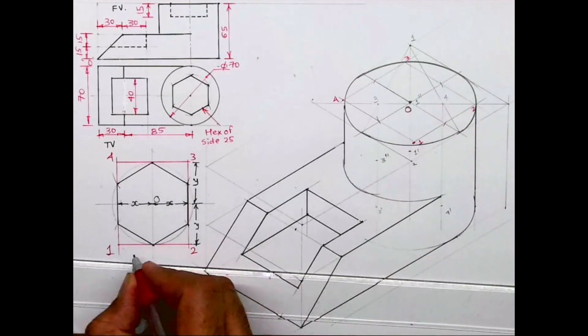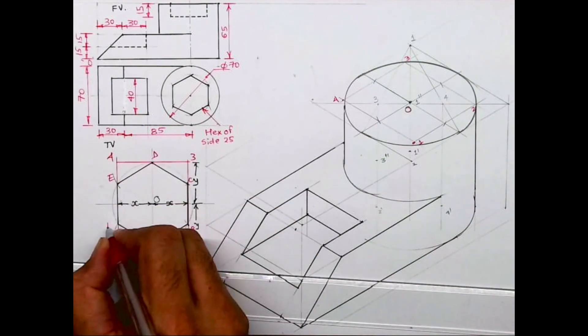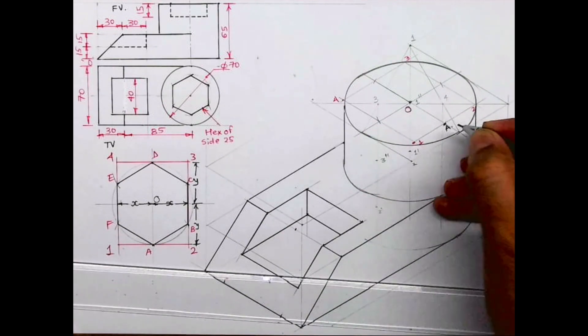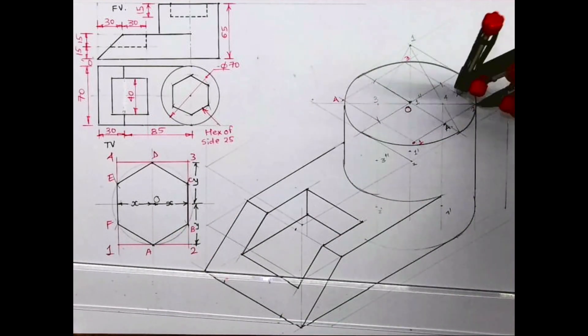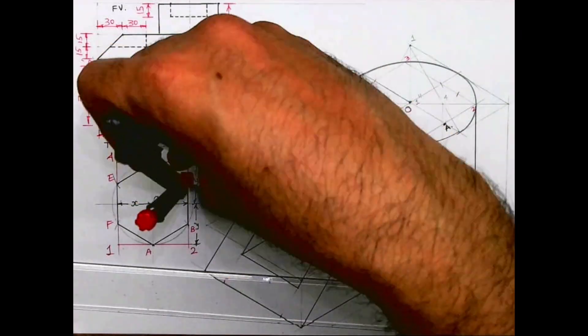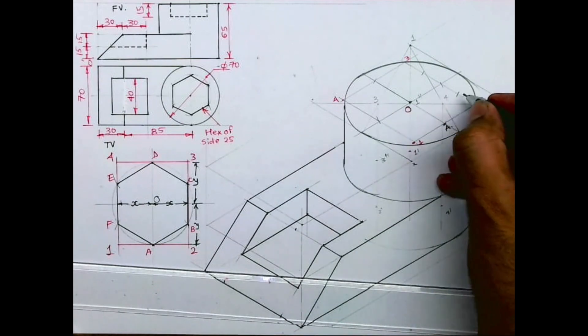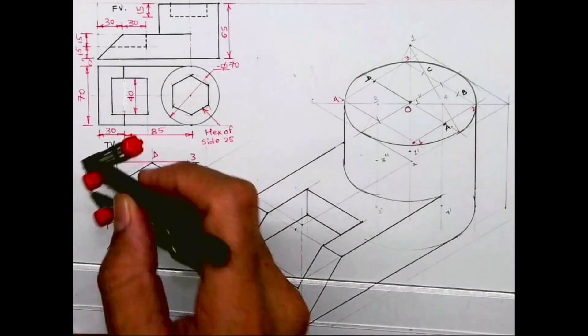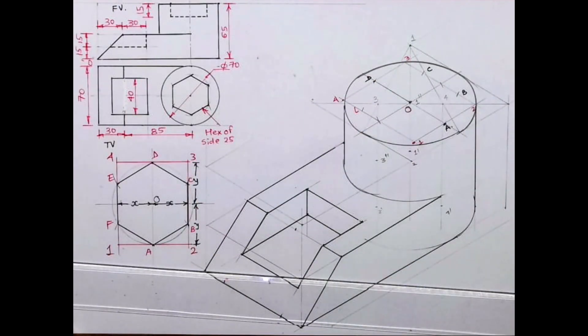Now I can name this as A, B, C, D, E, F. So A is already there, here between 1 and 2. For B you take 2 to B and you cut from here. For C you take 3 to C and cut from 3. This is B, this is C. D will be directly over there. For E you take 4 to E, cut from 4. And for F you cut 1 to F.